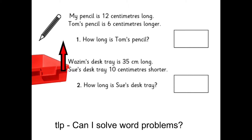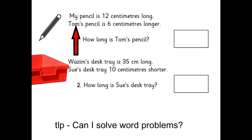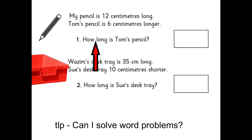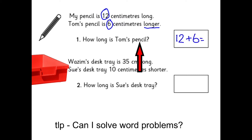If we look at the first one, it says: My pencil is 12 centimetres long. Tom's pencil is 6 centimetres longer. How long is Tom's pencil? The important information is the numbers — we've got 12 and 6 — and then the word 'longer'. So it's an adding problem. You need to add the 6 to the 12 and that will tell you how long Tom's pencil is.